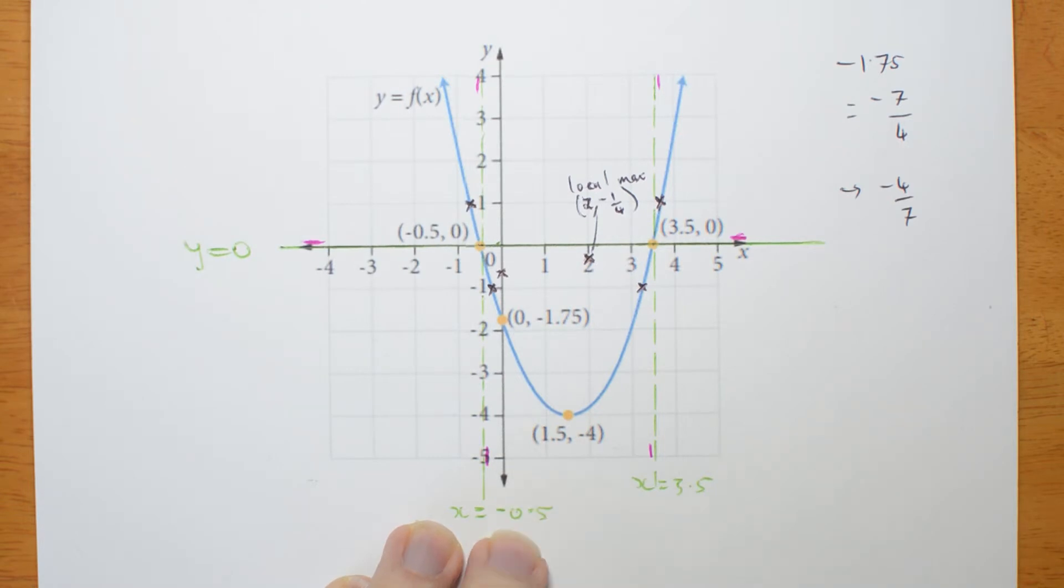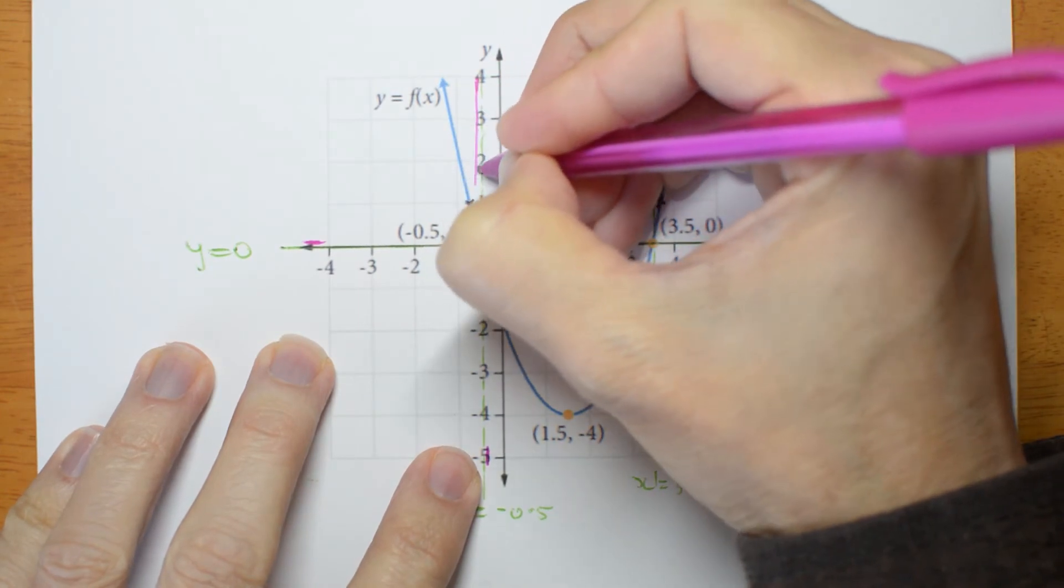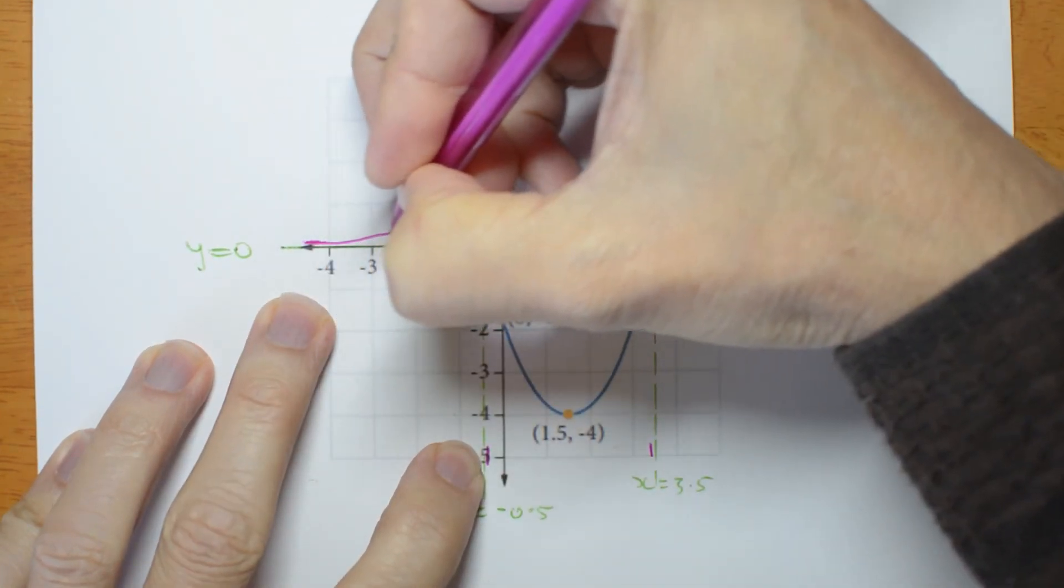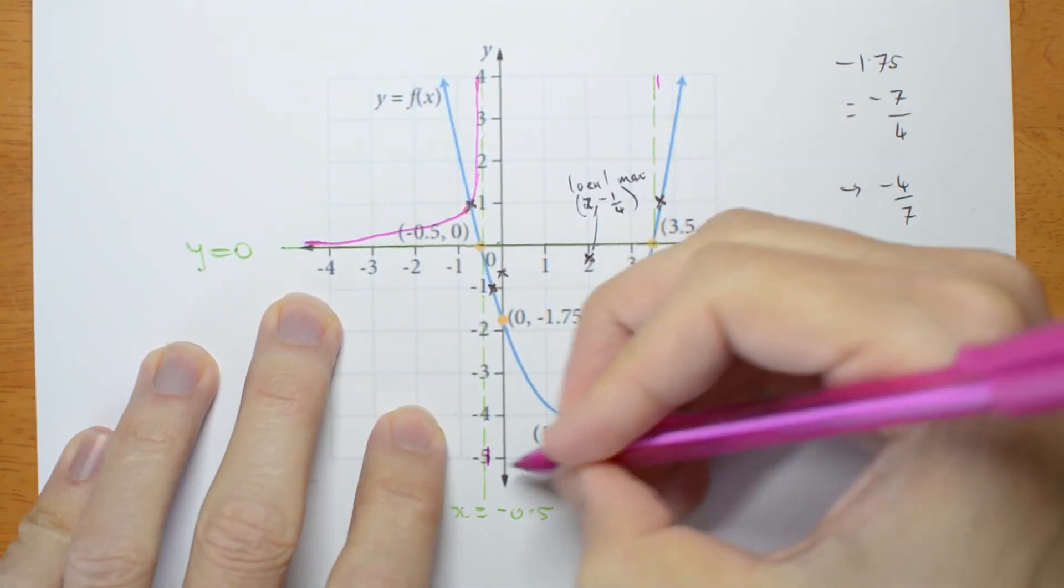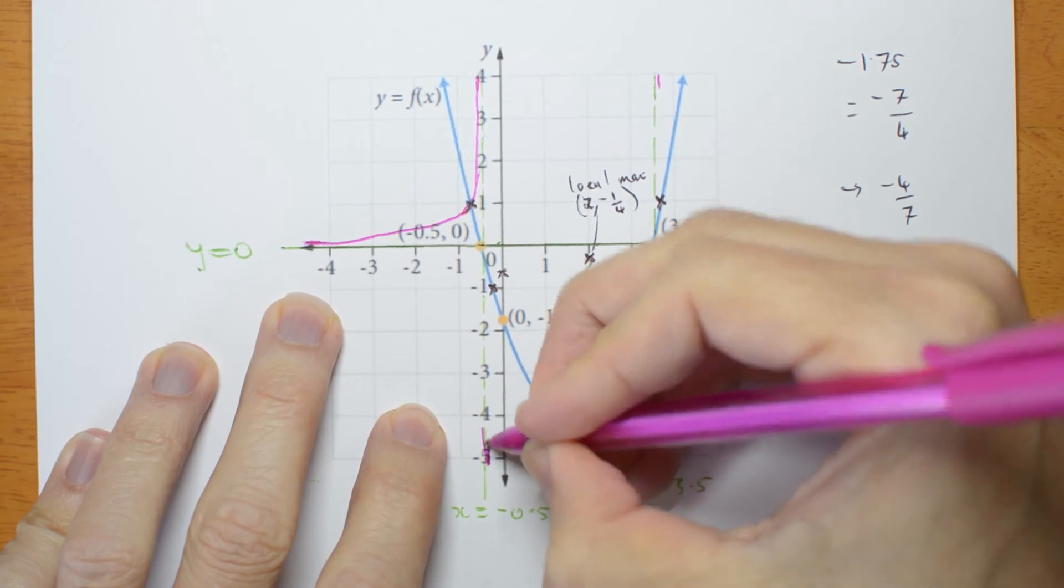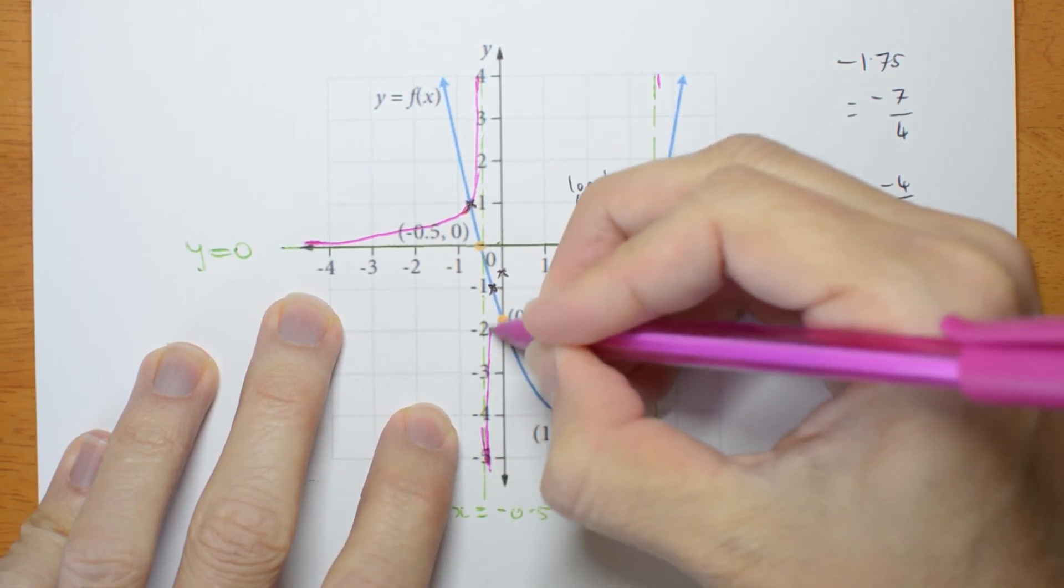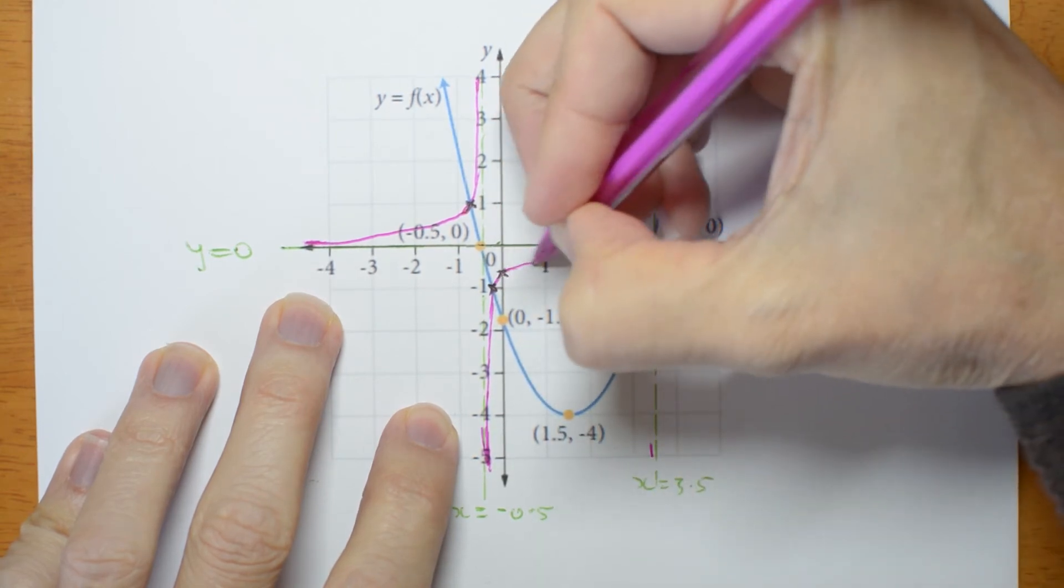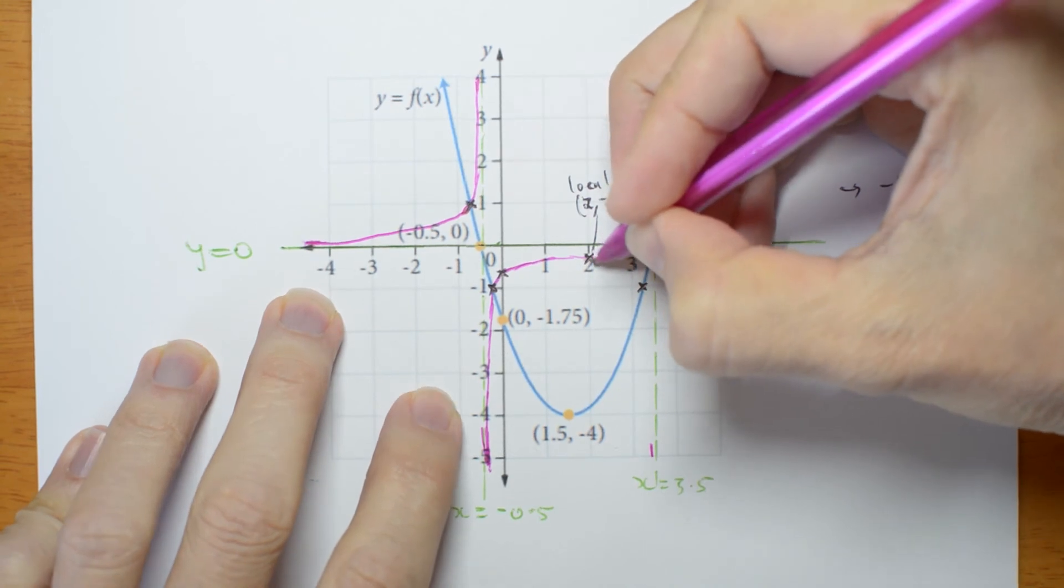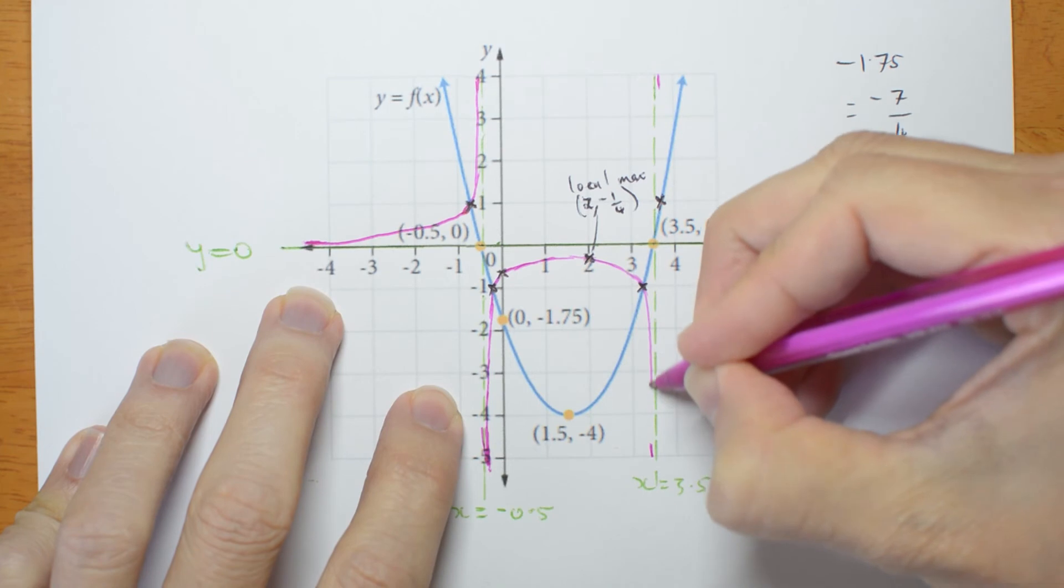Now, I should have enough information to be able to connect that up. It's going to come down here, through that point, and across to there. It's going to come up. Oops, that was bad. Not like this. Up here, through that point, that point, over to the local maximum, back down again, and down to here.